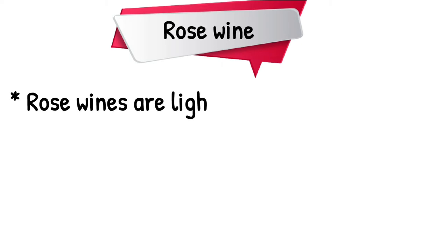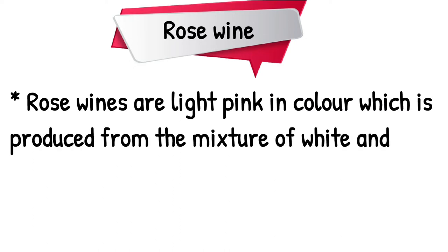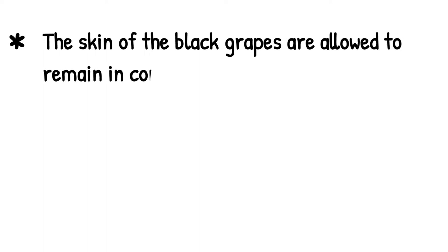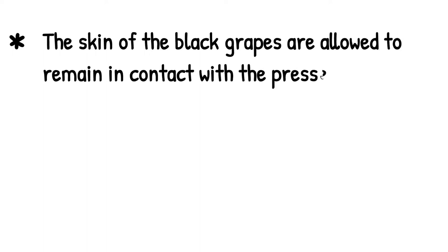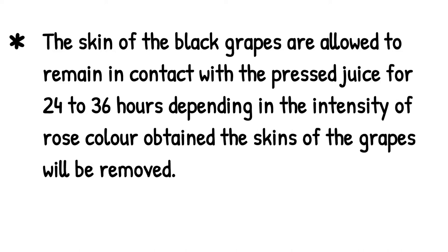Rosé wine: Rosé wines are light pink in color, produced from a mixture of white and red grapes, or only red grapes. The skin of the black grapes is allowed to remain in contact with the pressed juice for 24 to 36 hours, depending on the intensity of rosé color desired, after which the skins are removed.